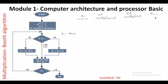A clarification: in this algorithm, Qn+1 is the LSB bit and Qn is the next MSB bit. The correct operation is Qn+1 minus Qn — present bit minus the next left bit. So when Qn+1 is 1 and Qn is 0: 1 − 0 = +1, leading to addition. When Qn+1 is 0 and Qn is 1: 0 − 1 = −1, leading to subtraction.